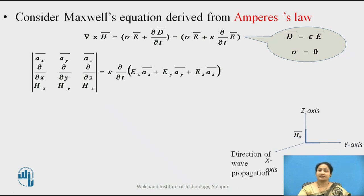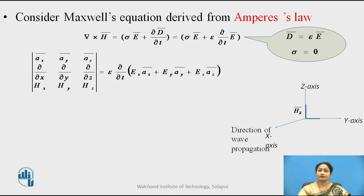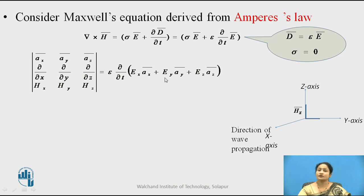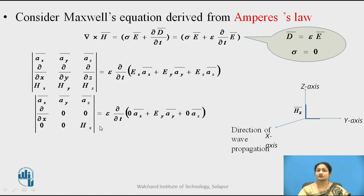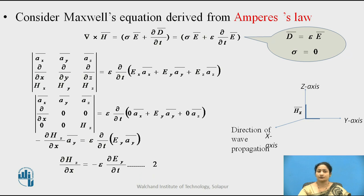As per the assumptions, Hz is nonzero while Hx and Hy are zero. Since the signal is varying along the x-axis, ∂/∂x is nonzero while ∂/∂y and ∂/∂z are zero. On the right-hand side, Ex and Ez are zero while Ey is nonzero, because we assumed the electric field in the y-direction. After substitution, equating the a-y terms, equation 2 is reduced to a simplified form.